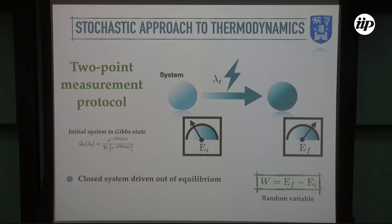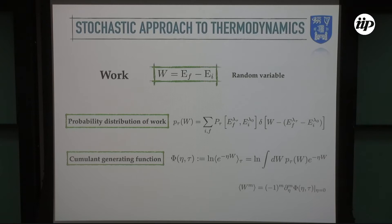Upon repetition over many runs of this experiment, this variable w, which is work, becomes a classical random variable which will vary every run of the experiment. This random variable will therefore be distributed according to some probability distribution P(W), where this object is the usual joint probability distribution of having obtained the outcome E_i at initial time and E_f at the final time. Given this probability distribution, one can in principle obtain all the cumulants and all the moments of the work distribution.